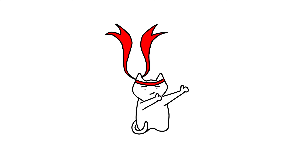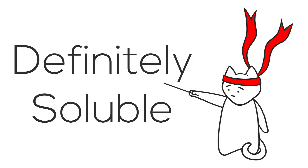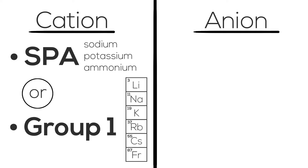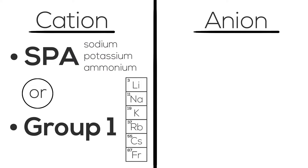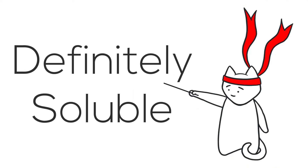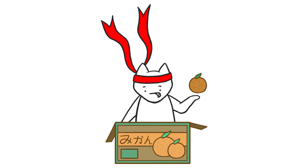Now that we have the definitions out of the way, let's start with the easiest category: the definitely soluble salts. Salts are made of cations and anions. If a salt is made with cations such as sodium, potassium, ammonium, or any Group 1 element from the periodic table, it must be soluble. If a salt is made with nitrates as the anion component, it is definitely soluble. The main takeaway is: any salts that contain SPAR, Group 1 elements, or nitrates are definitely soluble.